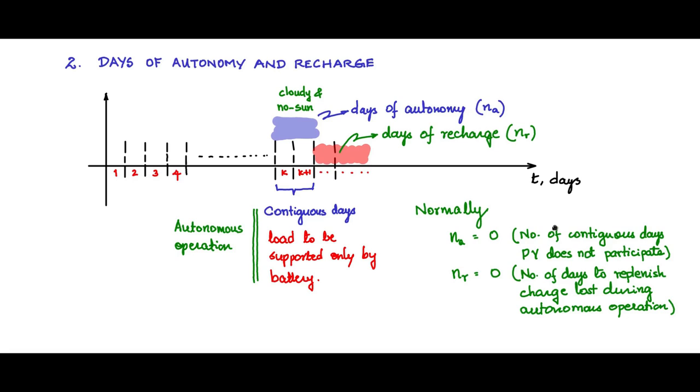By autonomous operation we mean on those days when the PV does not participate, battery alone will be supplying to the load. So we need to define na and nr. Normally we will take na as zero and nr as zero.